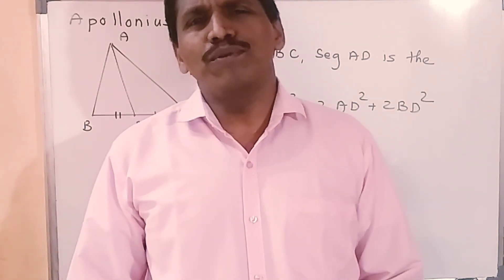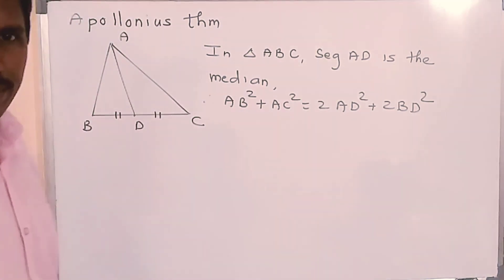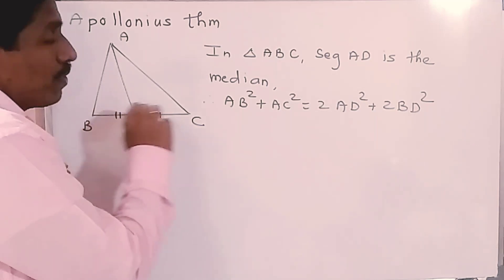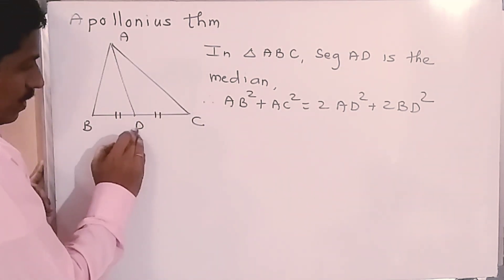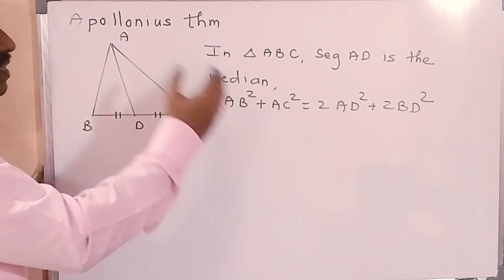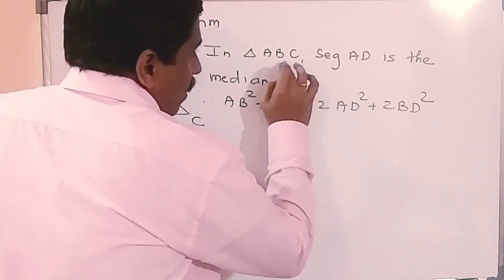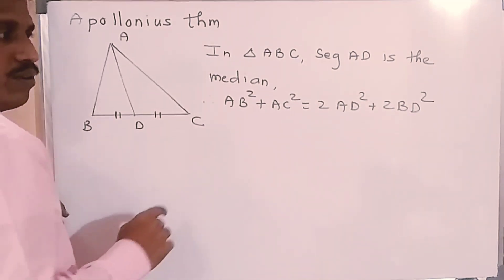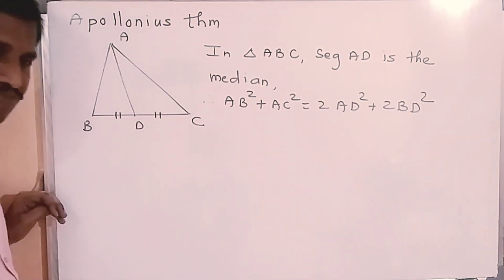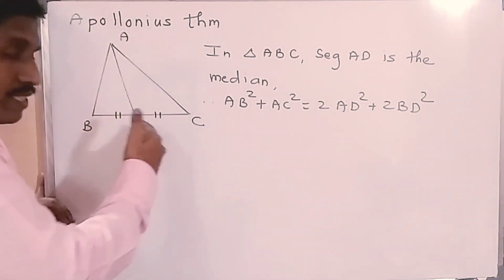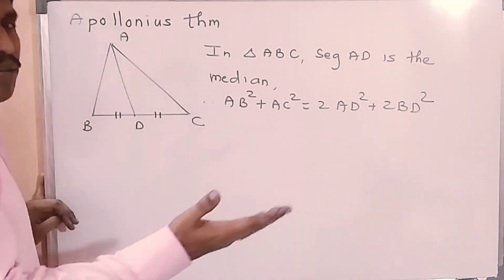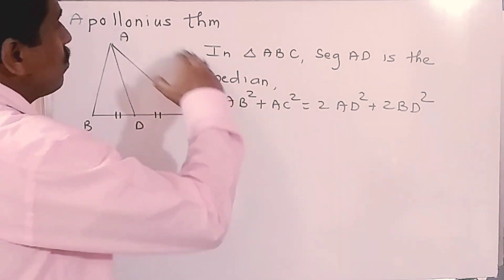The next concept from this chapter is Apollonius theorem. What is Apollonius theorem? If, in a triangle, a median is given — a median is the segment joining a vertex and the midpoint of the opposite side — then in triangle ABC where D is the midpoint of side BC, segment AD is called the median. Apollonius theorem states: AB square plus AC square equals 2AD square plus 2BD square. If three sides and a median are given and lengths of 3 out of these 4 segments are known, we use Apollonius theorem to find the unknown.